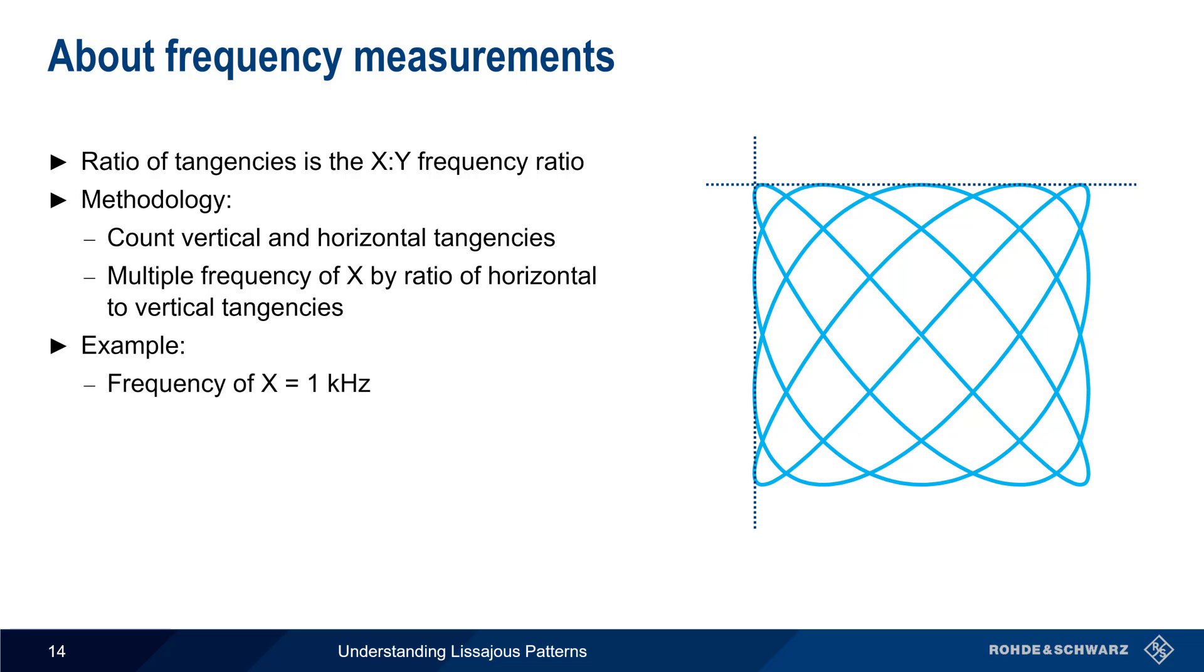If the frequency of X is 1 kHz, and we have 5 horizontal tangencies, and 4 vertical tangencies, then the frequency of Y is 5 divided by 4 times 1000, or 1.25 kHz. Note, however, that there is a practical upper limit on the number of tangencies that can be accurately counted.